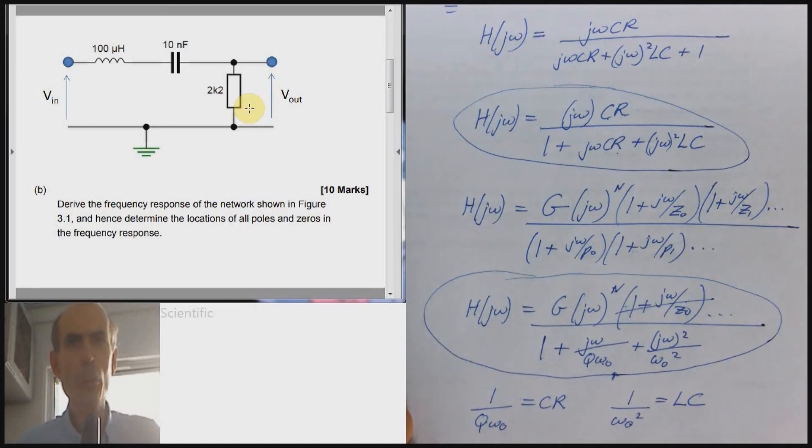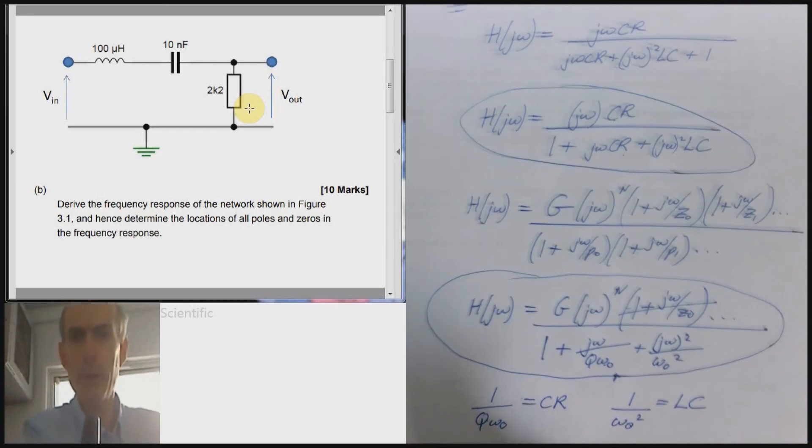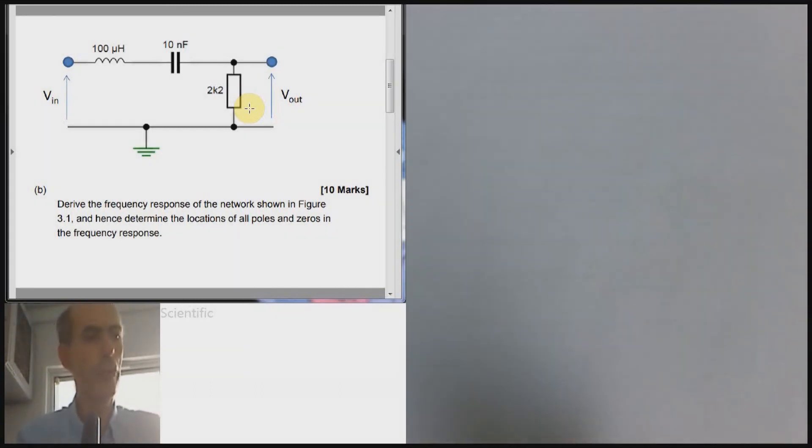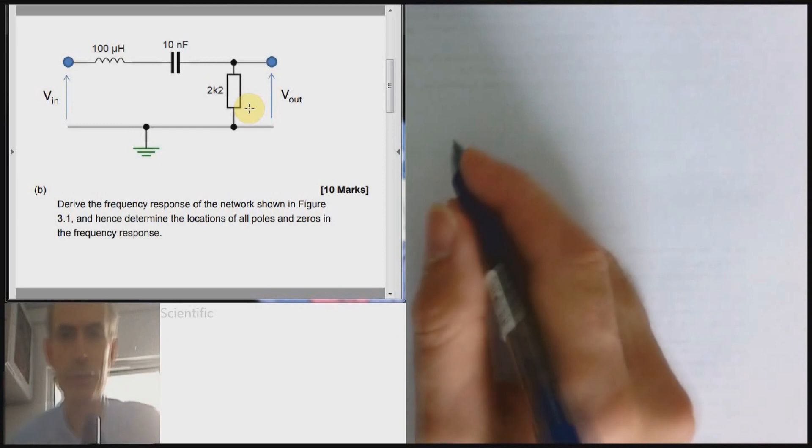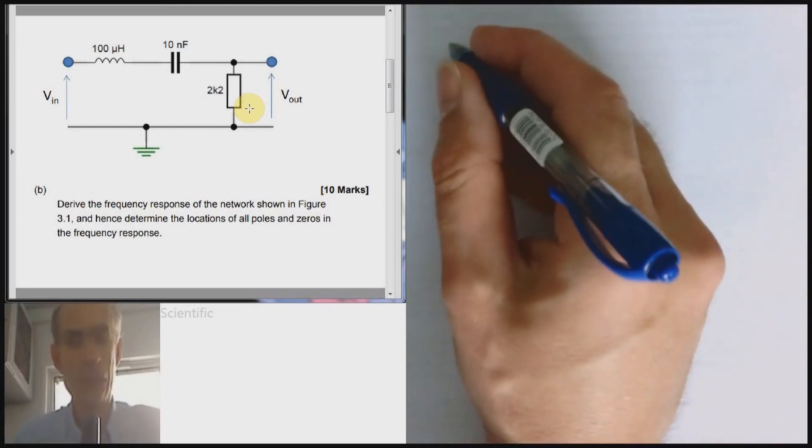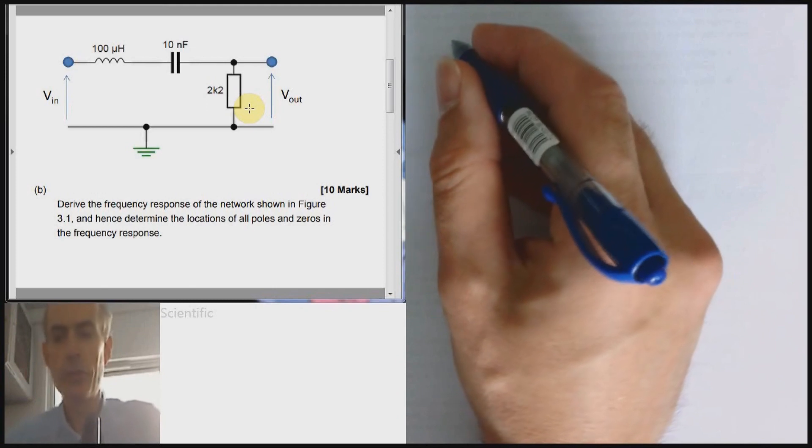However, that's not what the question asks for. It doesn't ask for the resonant frequency or the Q factor. It asks for the locations of the poles and zeros in the frequency response. You could work out the resonant frequency and the Q factor and then apply the standard formula to work out the poles in terms of the resonant frequency and the Q factor. But you may not remember that standard formula. So you may prefer to do it a slightly different way.